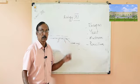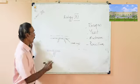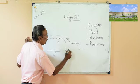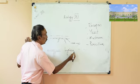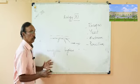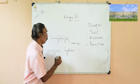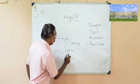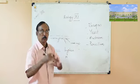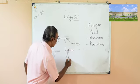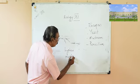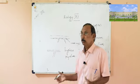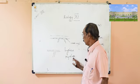These tubular structures are called hyphae (singular: hypha). A mass of hyphae together is called mycelium.